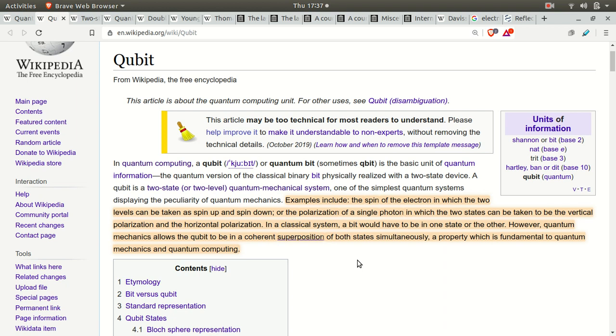Here's a couple of examples, ideas that we can use to actually implement this in reality. The spin of an electron in which the two levels can be taken as the spin up and spin down. Spin up, 1. Spin down, 0. Or the polarization of a single photon in which the two states can be taken to be the vertical polarization and the horizontal polarization. In a classical system, a bit would have to be in one state or the other. However, quantum mechanics allows the bit to be in superposition, both states simultaneously, which is fundamental to quantum mechanics and quantum computing.